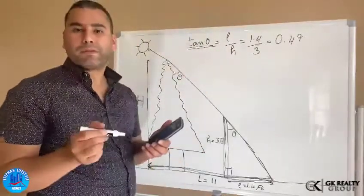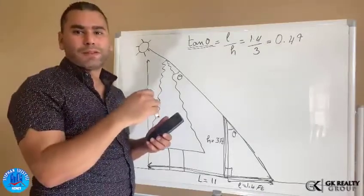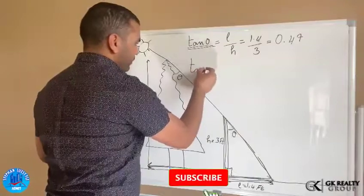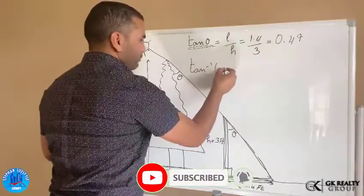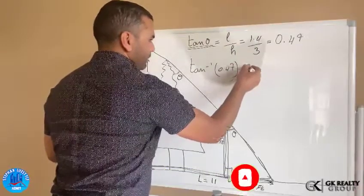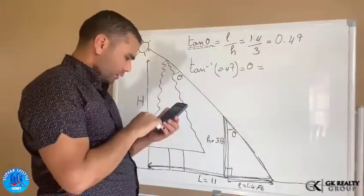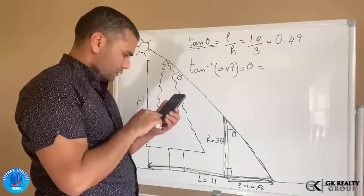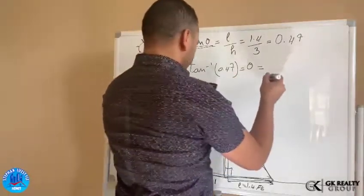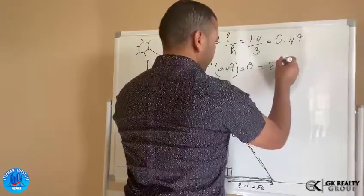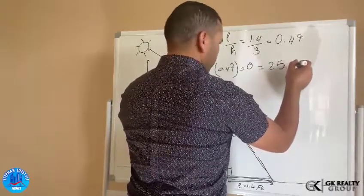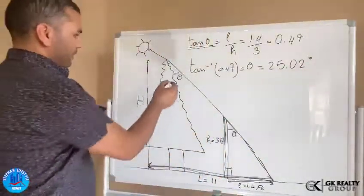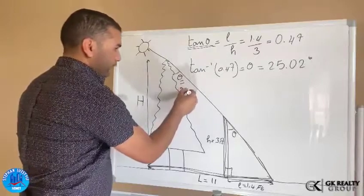So to find what theta is, we have to do inverse tangent. So it will be inverse tangent of 0.47. This gives us theta is equal to 25.02 degrees. Now we have the angle. So this here is 25.02.